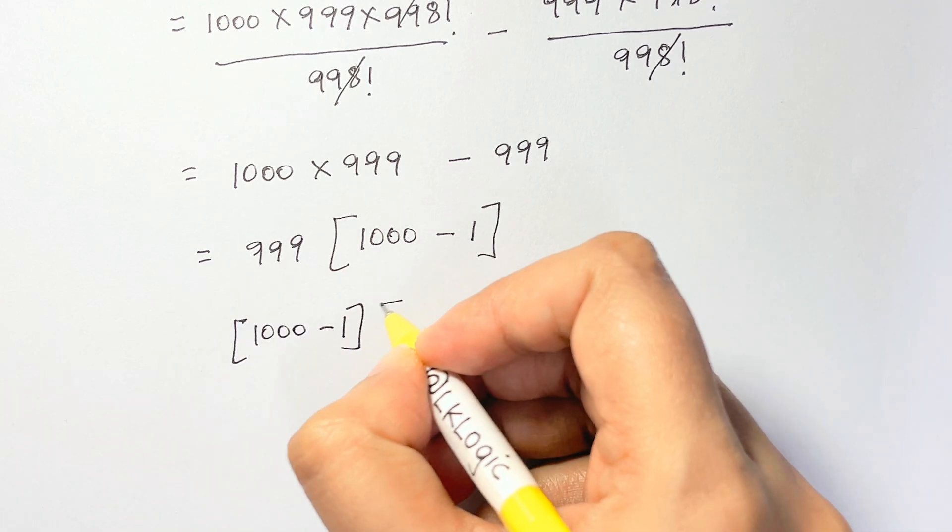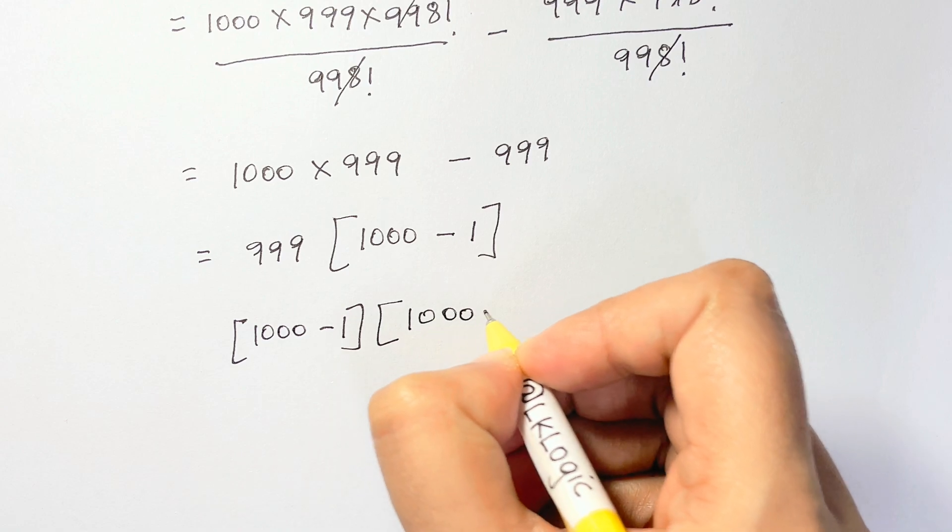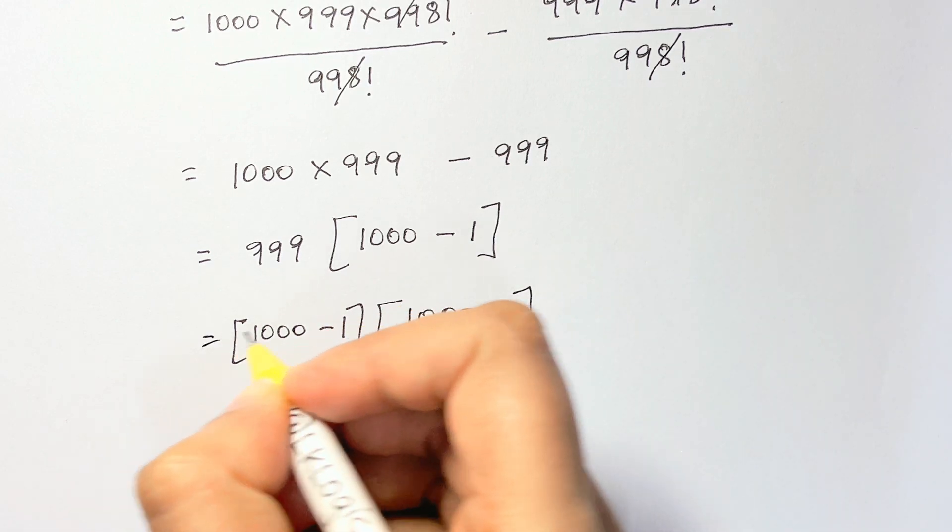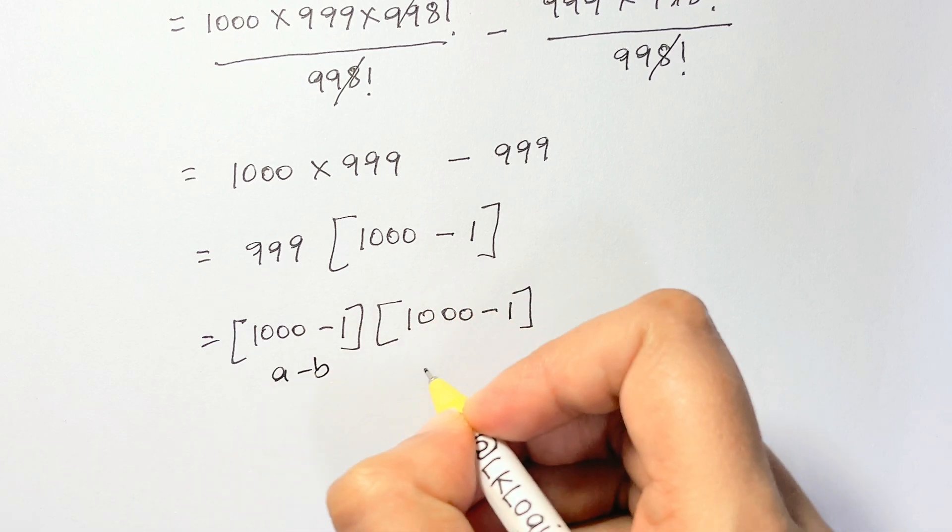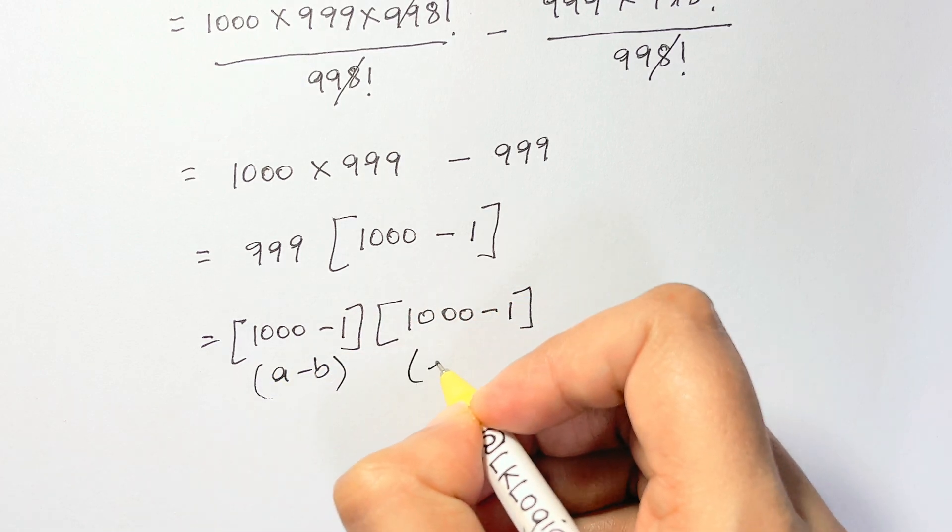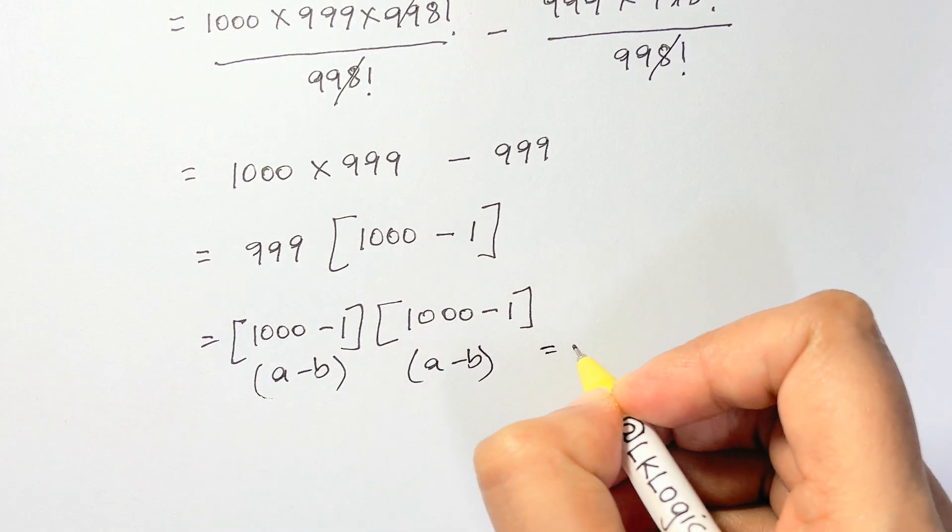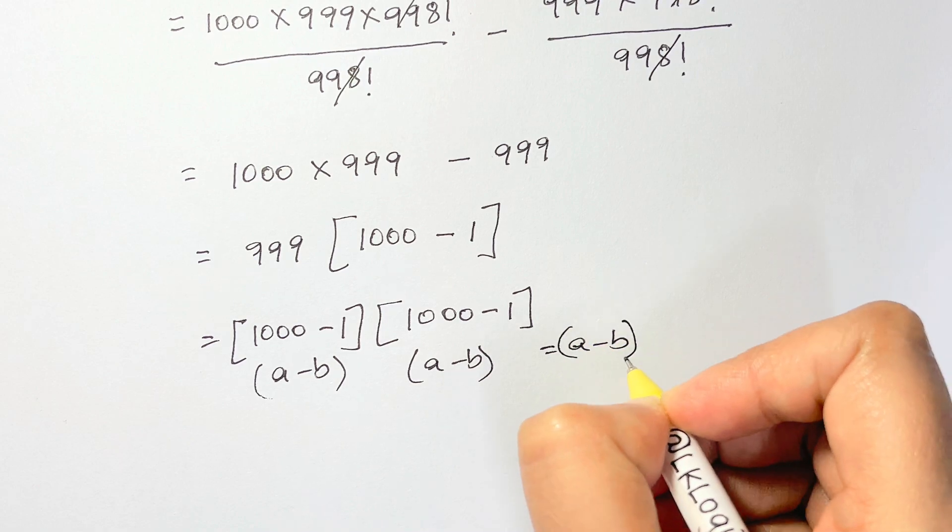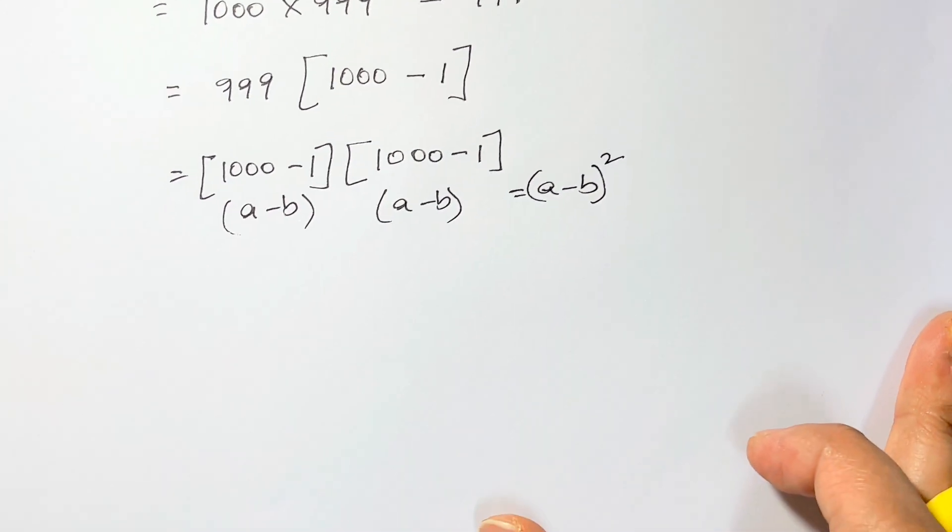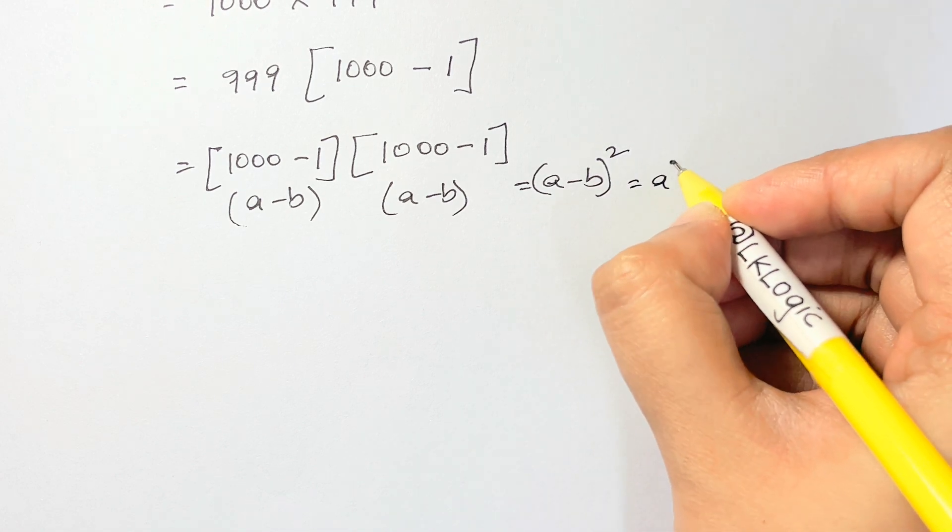999 can be written as 1000 minus 1. Then we have (1000 minus 1) times (1000 minus 1). This is like (a minus b) times (a minus b), which is (a minus b) squared.